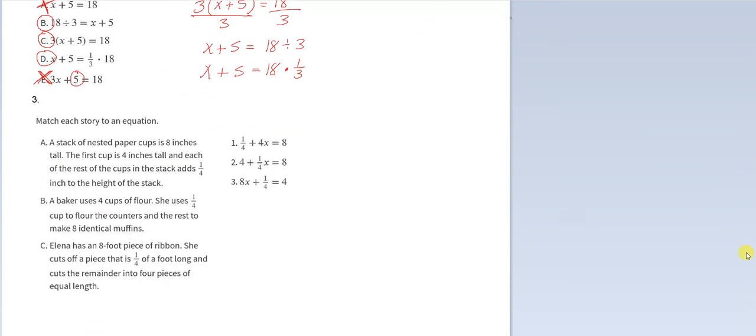Let's go down and look at these matches of stories. We're going to match the story to the equation. The stack of nested paper cups is eight inches tall. The first cup is four inches tall, and each of the rest of the cups in the stack adds a quarter inch to the height of the stack. Each of the cups add a quarter inch. So that tells me that a quarter should be getting multiplied by the number of cups that are being stacked, which of course is your unknown here. So I'm leaning toward number two for that one just because I see the each and the quarter.